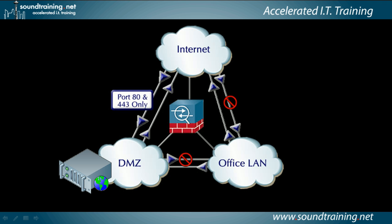What this is really about is where you can initiate traffic. In this example, the DMZ can initiate traffic onto the internet. The office LAN can initiate traffic onto the DMZ and the internet. But the internet can't initiate traffic into either the DMZ or the office LAN, with the exception of port 80 and 443 going into the DMZ.